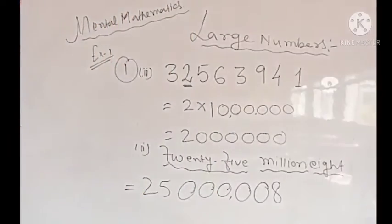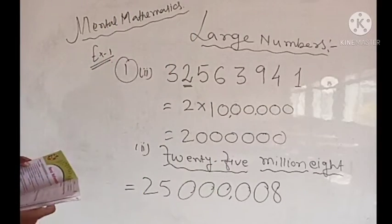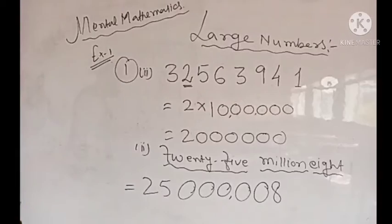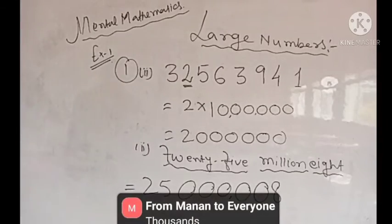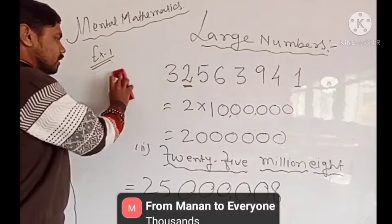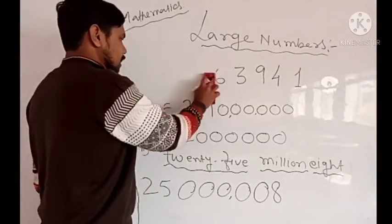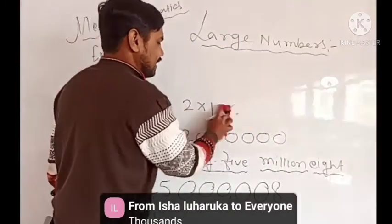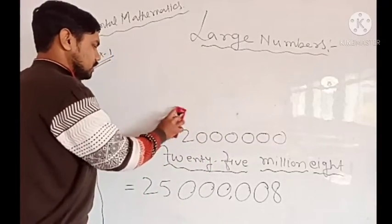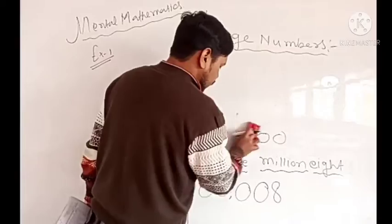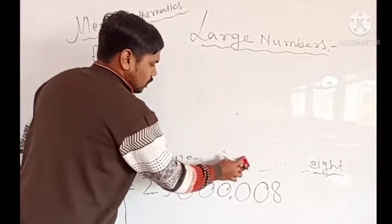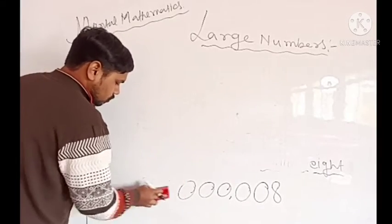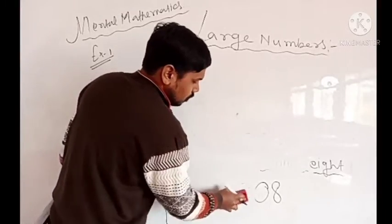So this is the difference between Indian place value and international place value. Now, quickly tell me the period of 8 in this. We have learned two things: one is all about place, and another is about period. This place and period difference — during the classes we also learned that periods are groups of places, and within each period there are different places, as in Indian or international systems.